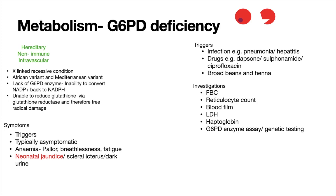In summary, the blood film for G6PD deficiency will show Heinz bodies, bite cells, and also blister cells. LDH will be high, haptoglobin will be low, and more diagnostic investigations include a G6PD enzyme assay to assess enzyme levels, as well as genetic testing.